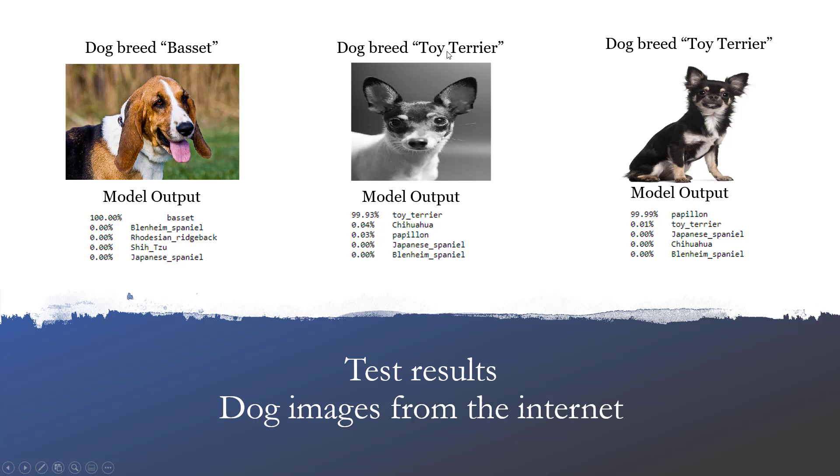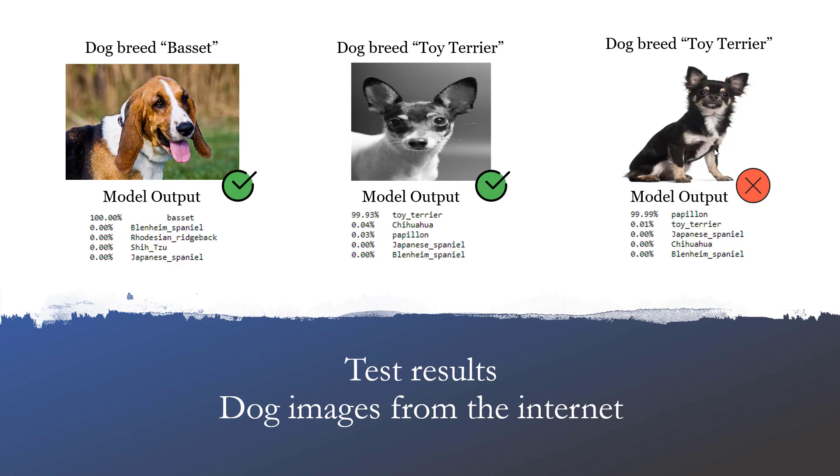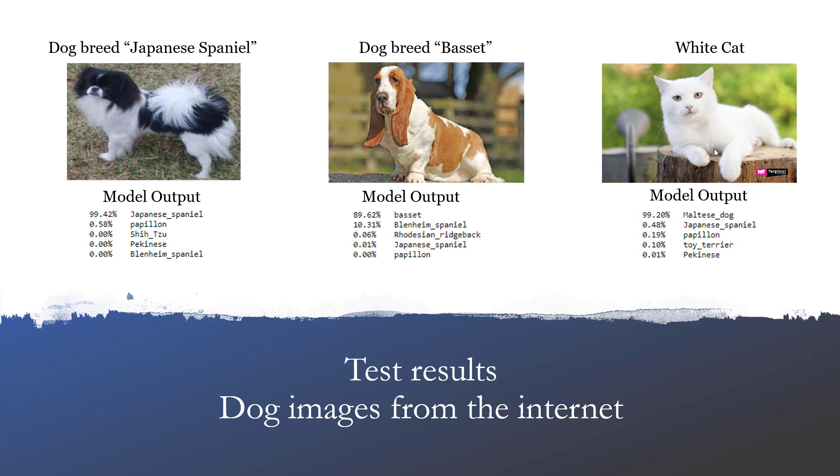The next is a toy terrier, where the model predicts it correctly. The third example is where a toy terrier is predicted as a papillon, which looks similar in some cases.